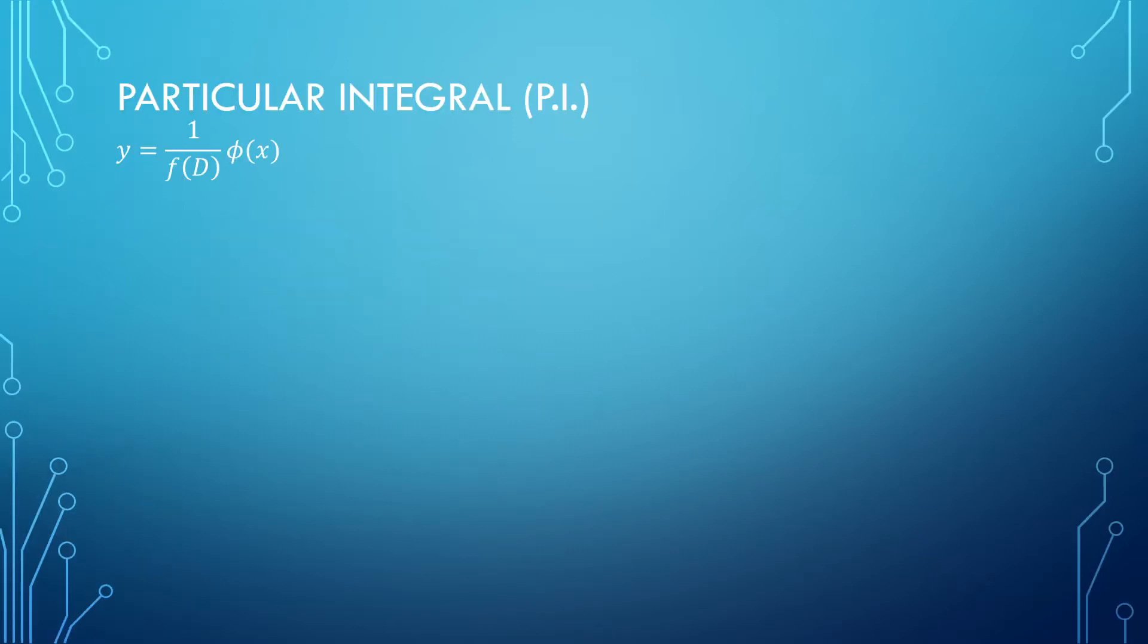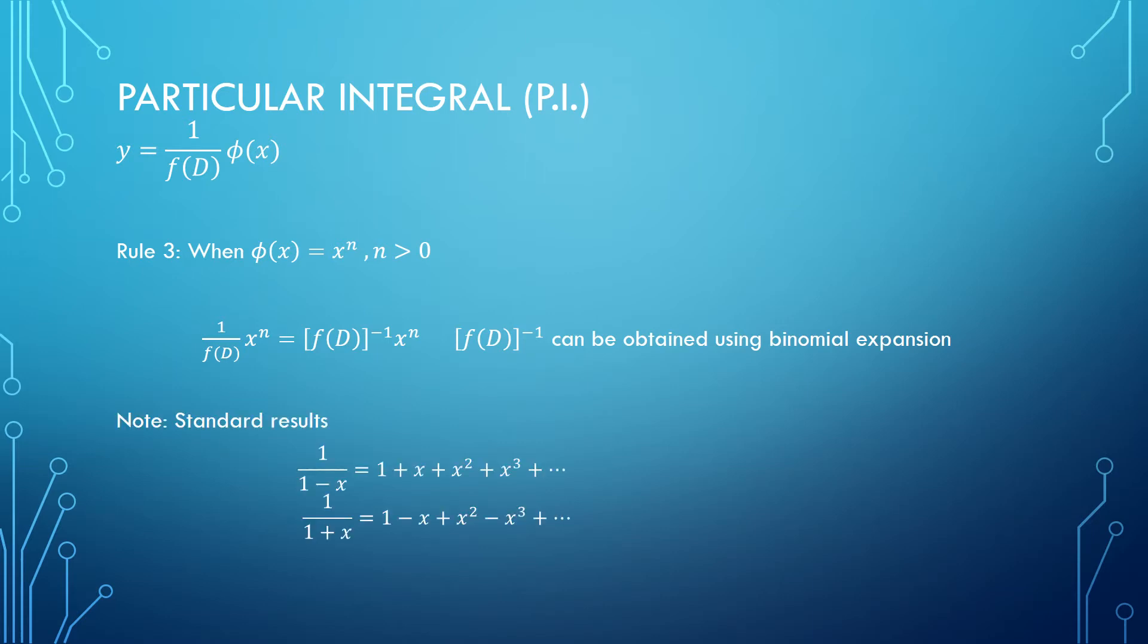Let us look at Rule 3. If I am working with an algebraic function where n is a positive integer, the rule says 1 upon f(d) operated over x^n can be written as f(d) inverse x^n. This f(d) inverse can be obtained using binomial expansion. Most commonly, the standard results 1 upon 1 minus x and 1 upon 1 plus x are used here.